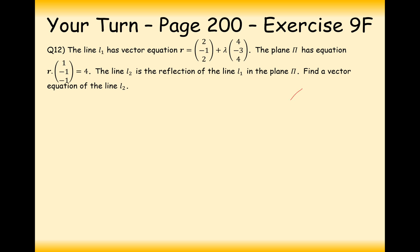Alright, I hope you've had a good go at this. If you haven't persevered through, please do pause the video again and try again — I don't want you to just watch the video and get the answers for free. So this is the equation of our line: vector equation (2, -1, 2) + λ(4, -3, 4), and we want to reflect it in the plane.